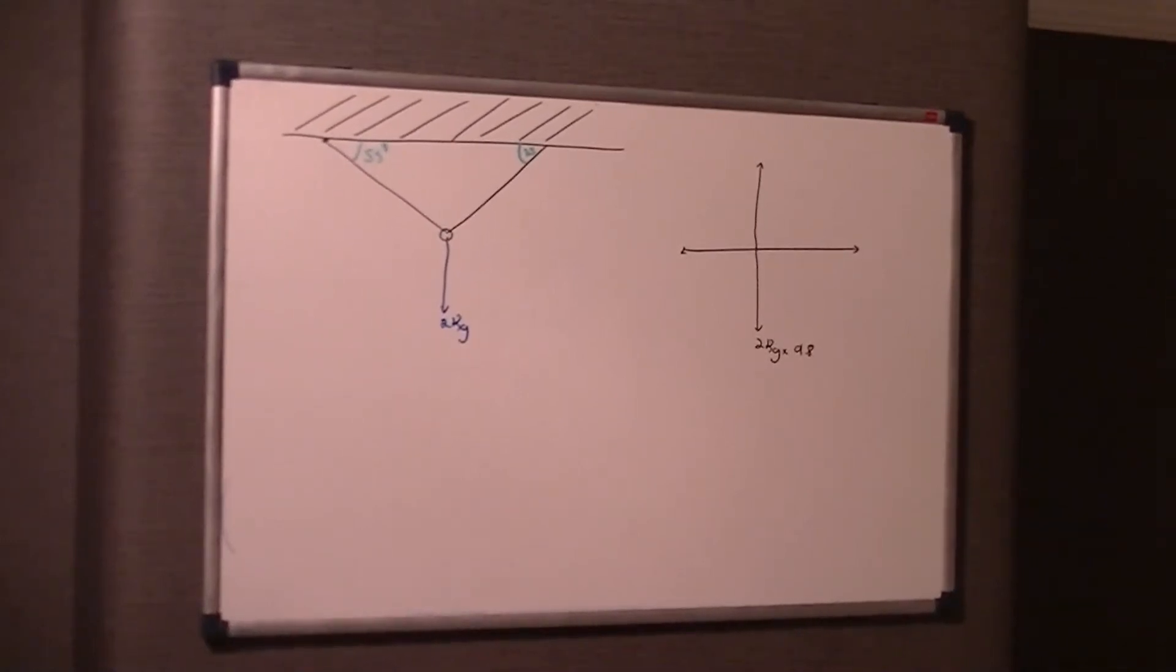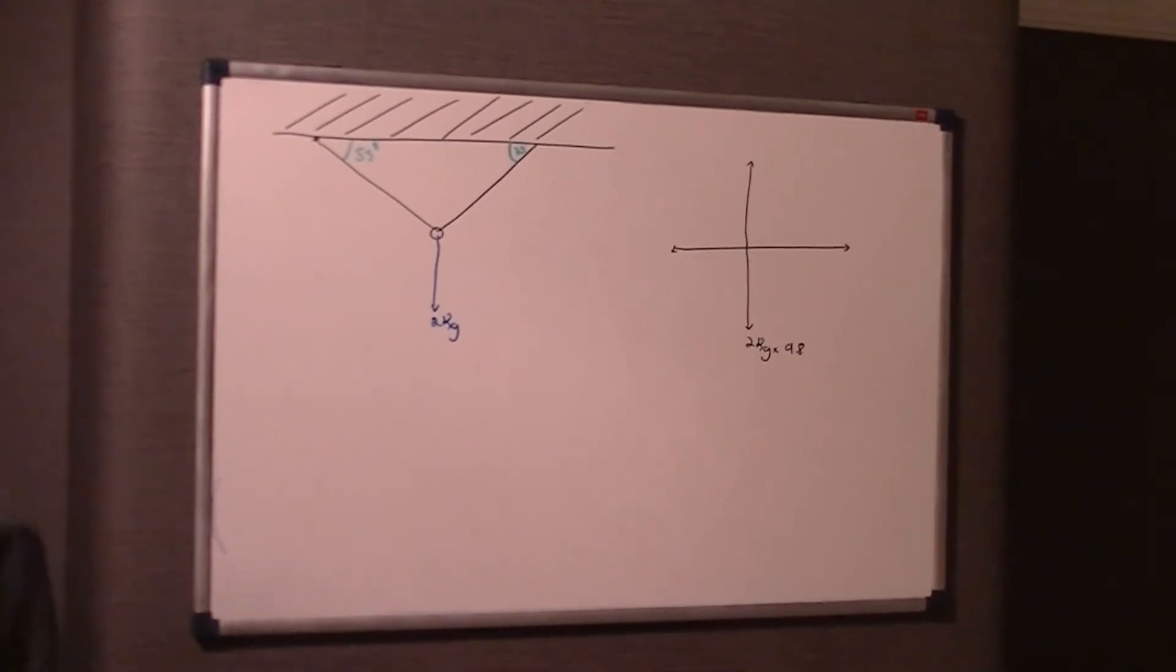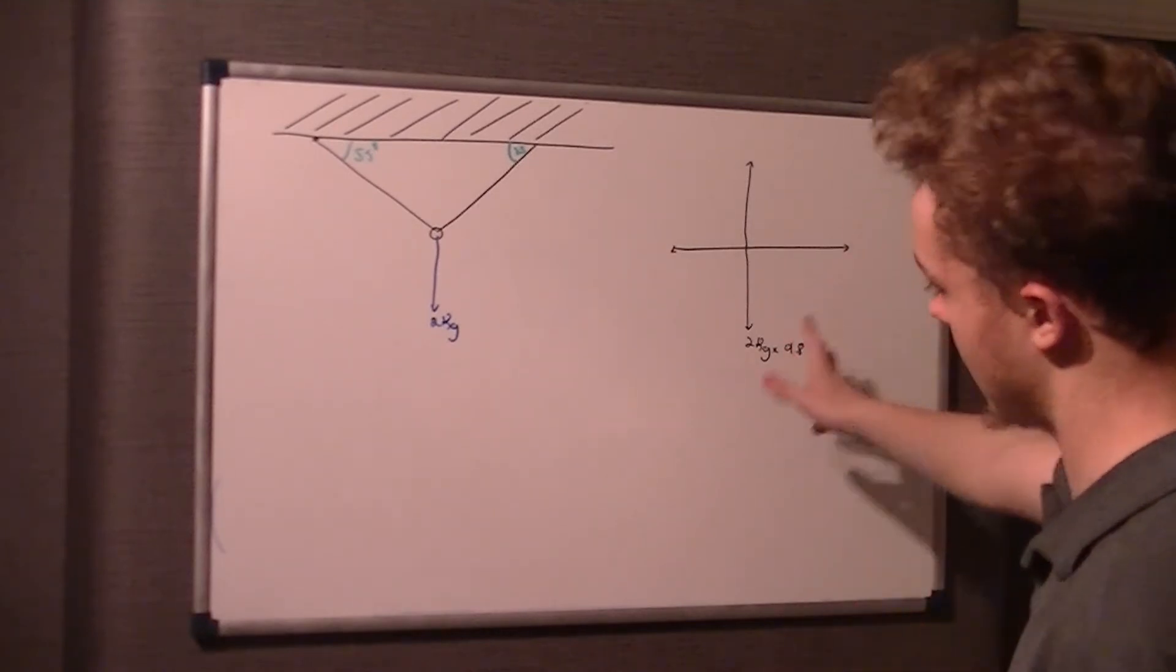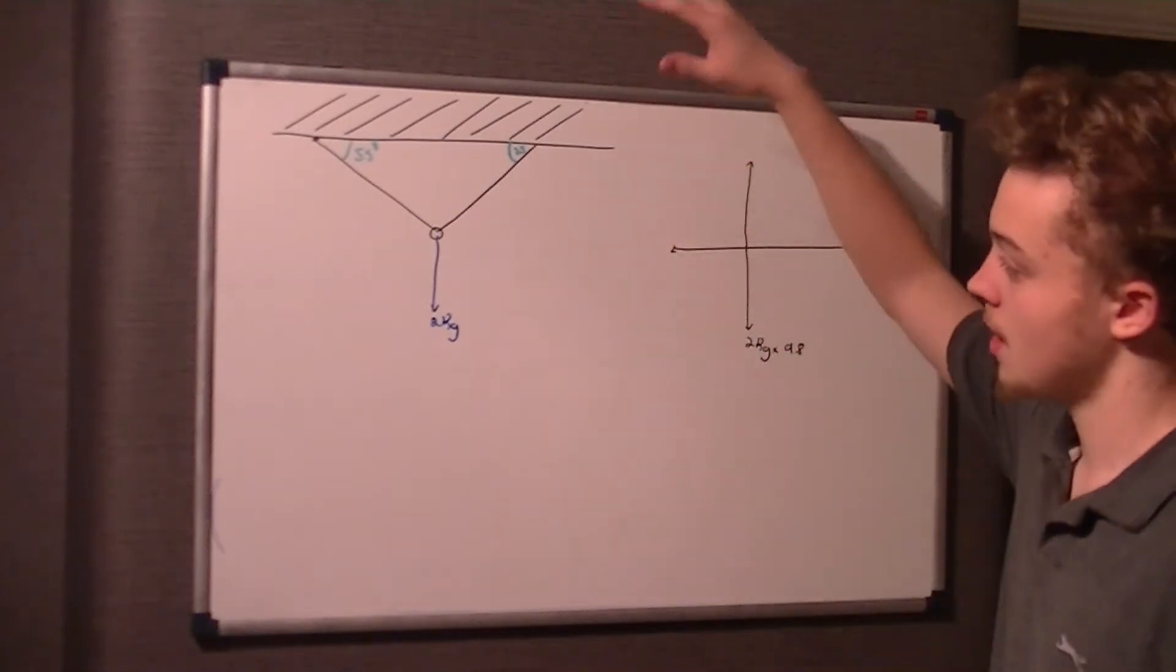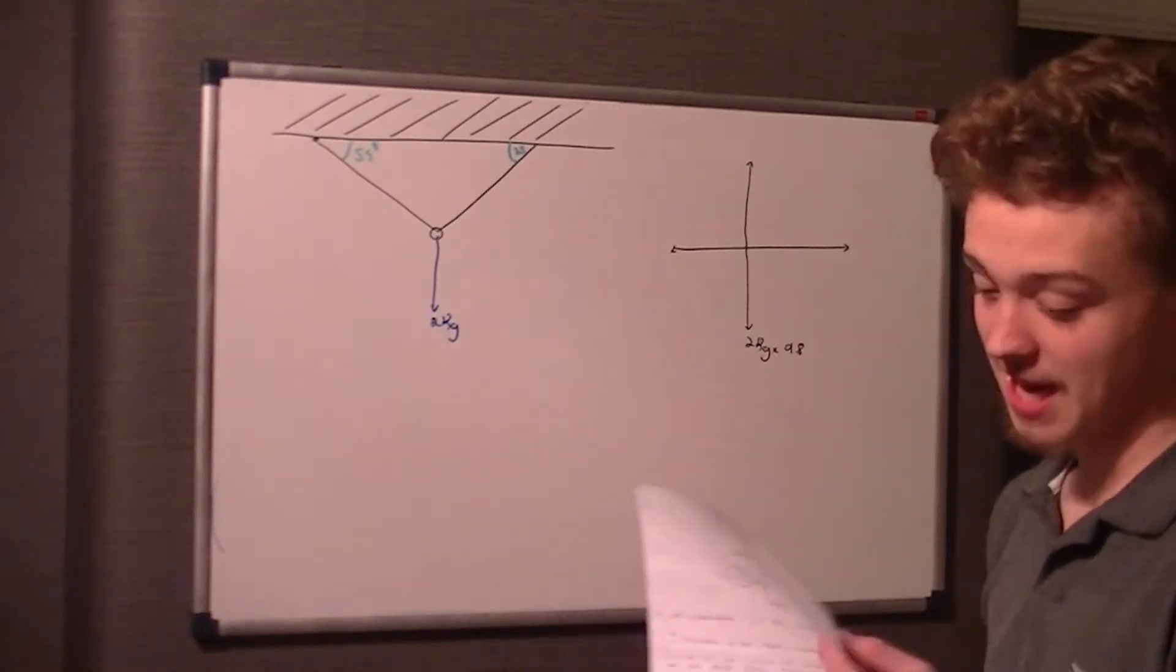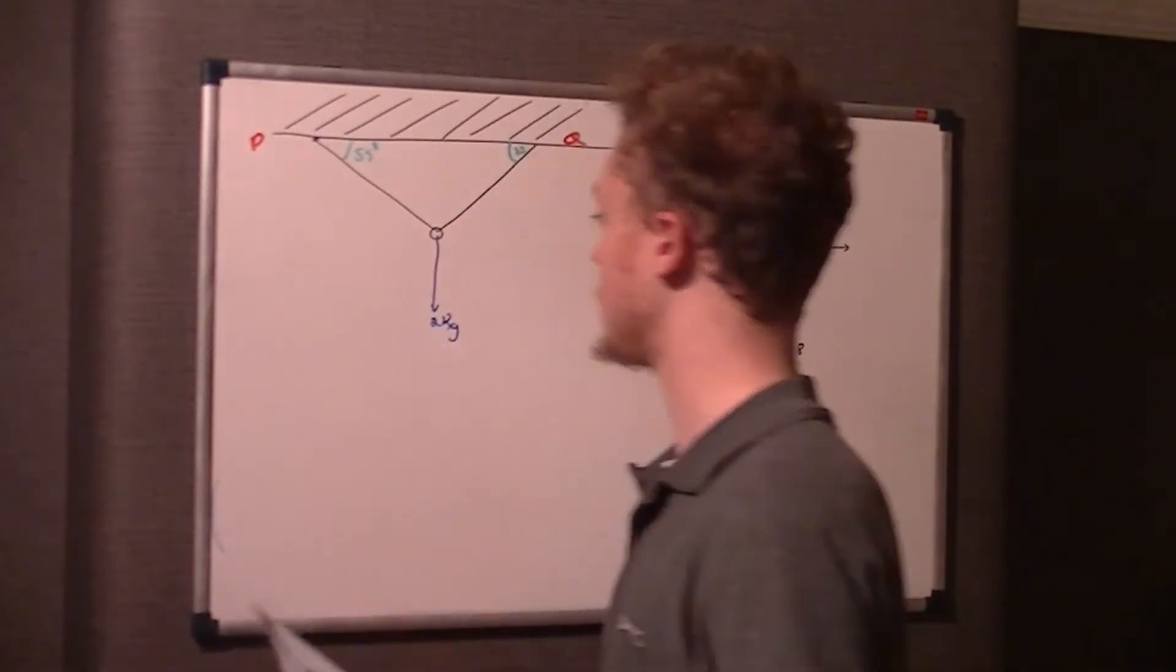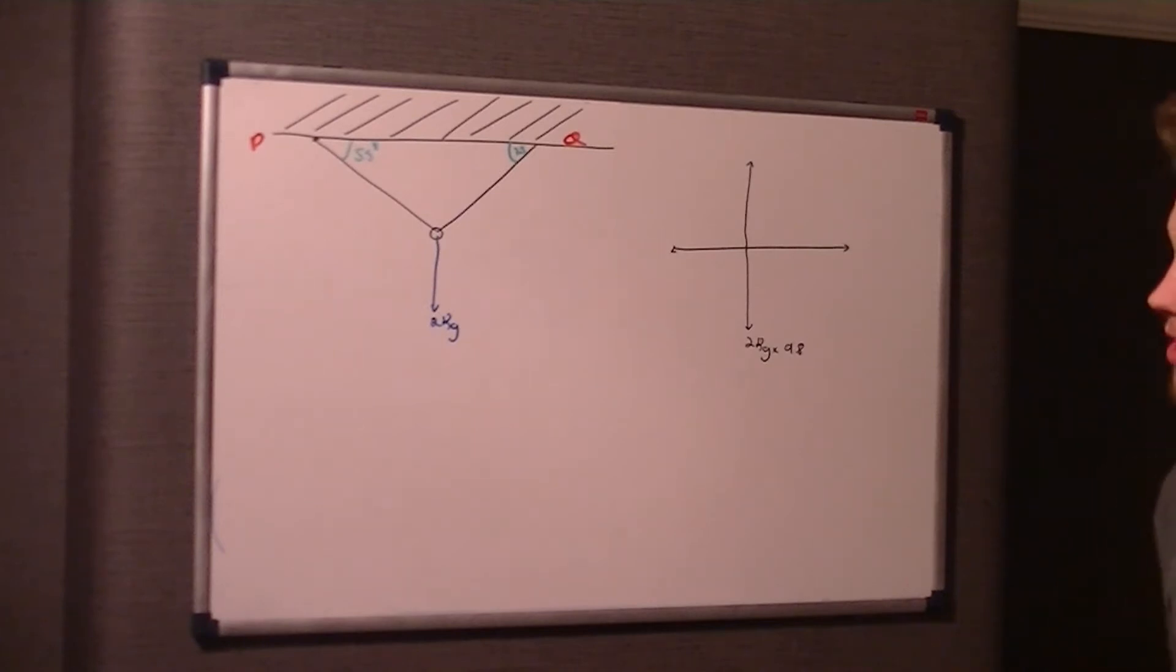Welcome, this is now question number 3 for Fxl's M1 June 2015 paper. So this question is an equilibrium question. Now what I've drawn here is a free force diagram. Basically what we've got here is the original diagram given on the paper. We've got two points, P and Q, and the angle that the thread makes with the roof is 35 degrees at Q and 55 degrees at P.